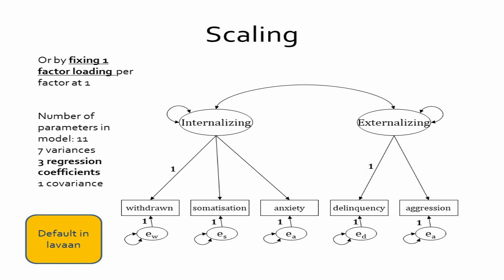This type of scaling — fixing one loading per factor to one — is the default setting in LAVAAN. You could change it by using the argument std.lv = TRUE, meaning standardized latent variables equals true. This argument indicates that by fixing the latent variable variances to one you have created standardized latent variables.